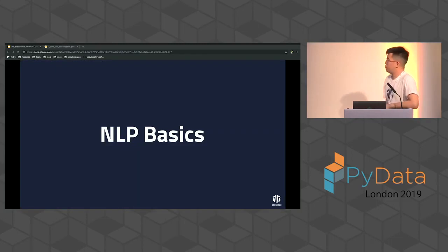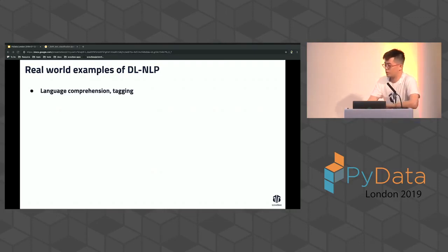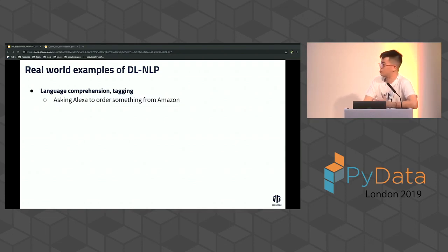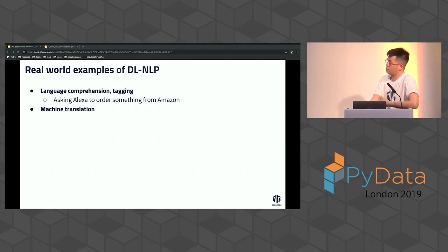Now a quick breeze through NLP basics — how to do text preprocessing and how to use PyTorch for NLP. Some real-world NLP use cases: language comprehension — things like audio to speech-to-text and interpreting that text, like Alexa. In this talk, we're going to focus mostly on text-to-text or text classification problems, not audio files.